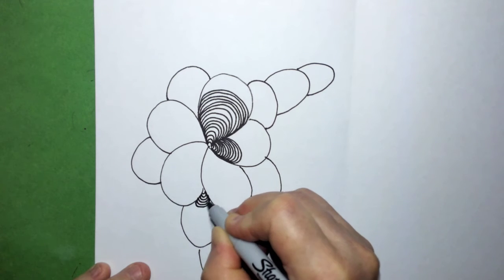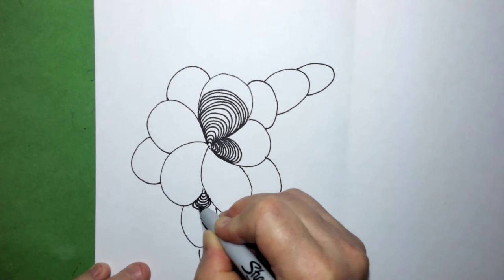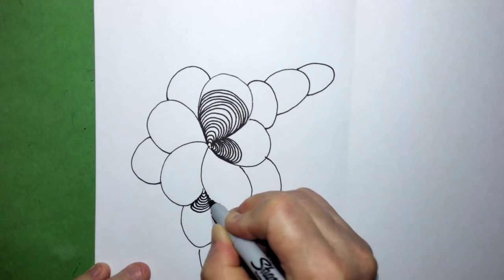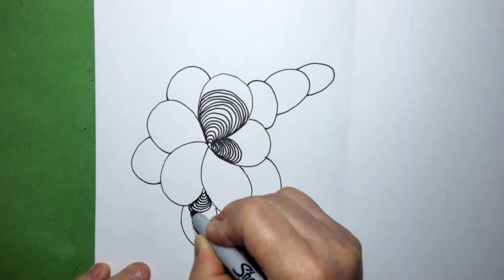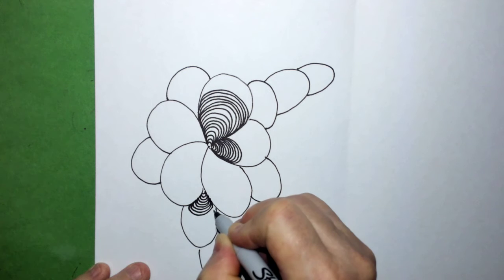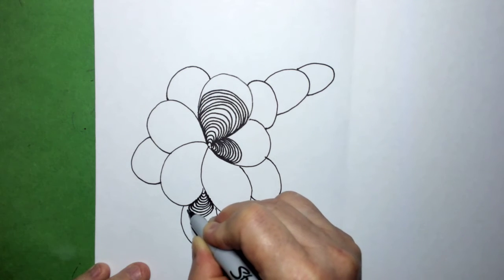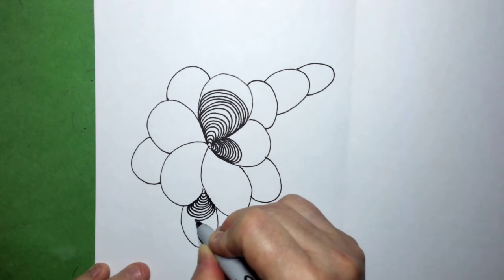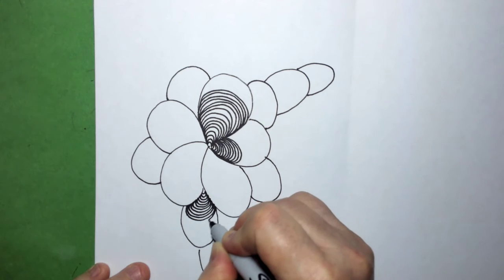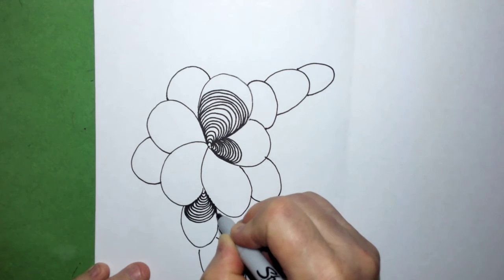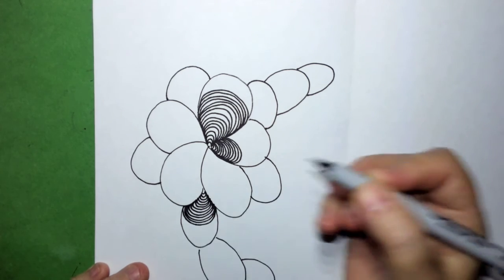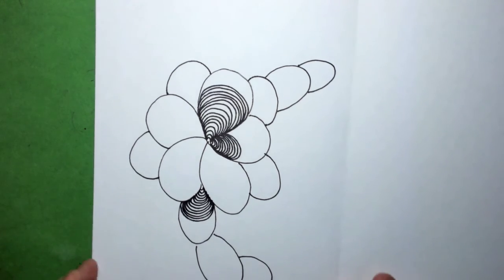And make sure that you go right up to this so it gets nice and dark here. If you go like that it gets dark again. And move your paper however works for you, that you feel good about balancing your body, your hand while you're doing this.